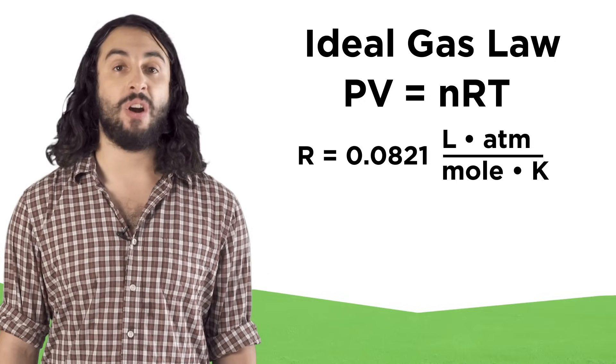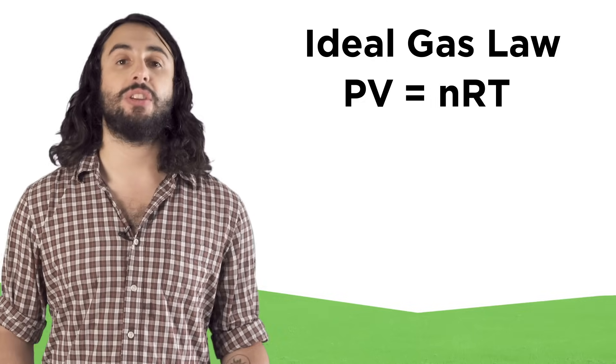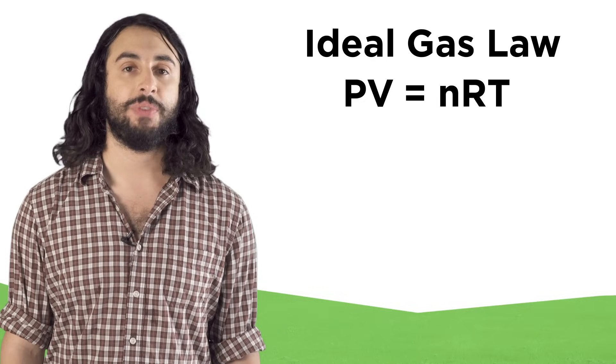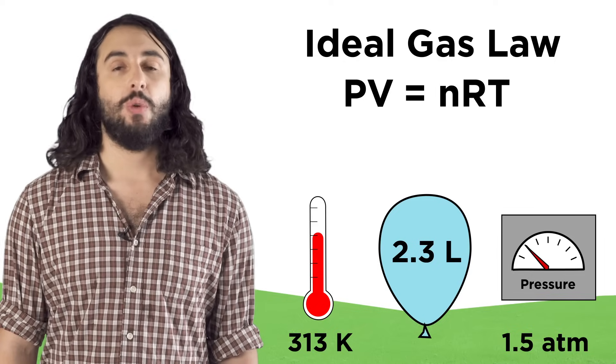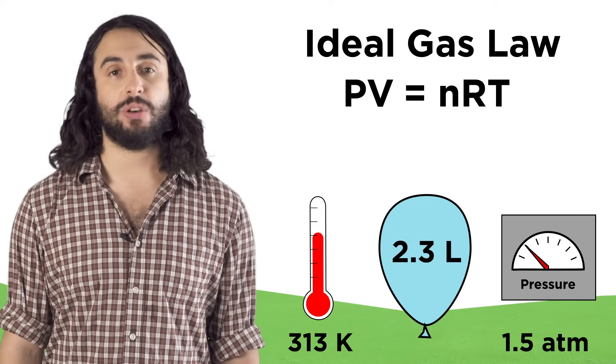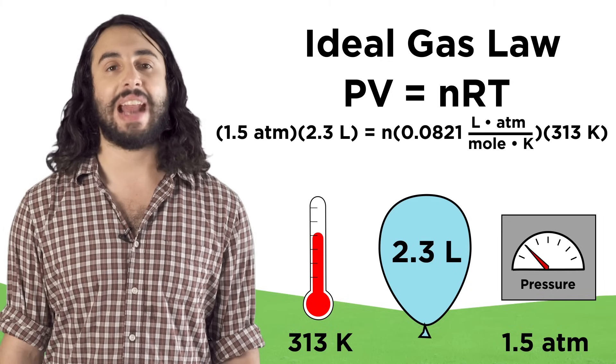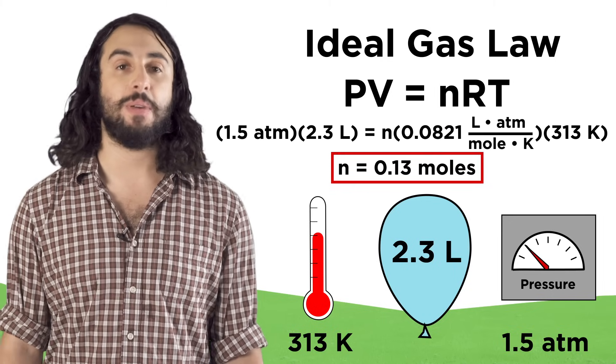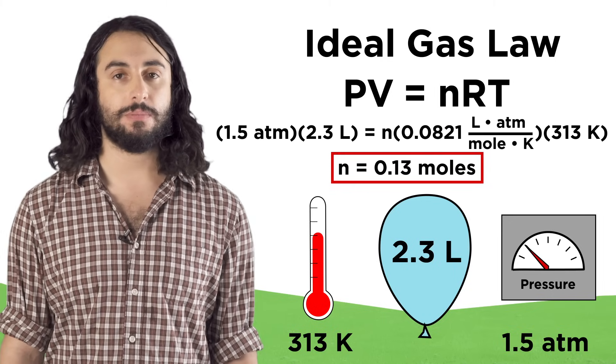This equation is useful when we aren't looking at a change, but just to know the values of all four variables at once, like in this case. We could know the pressure, temperature, and volume of a gas, and quickly calculate how many moles of particles must be in the sample. So if you were looking at a sample of gas and you have three of the four variables, you can solve for the fourth using the ideal gas law. If you are given some initial conditions as well as some final conditions, you can use one of the other laws to find the other information. Just plug in what you know and solve for what you don't.